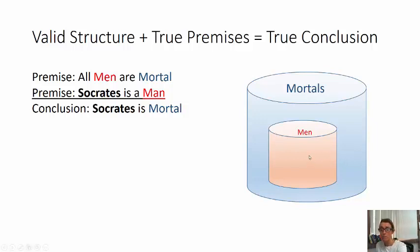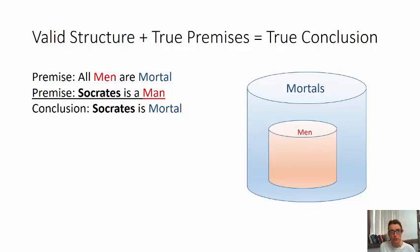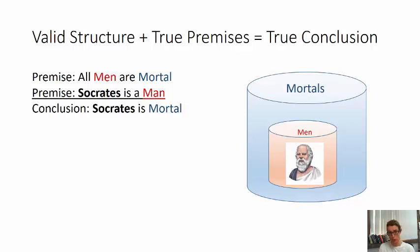So we have a men-bucket inside the mortals-bucket — that illustrates premise one. Now illustrate premise two: Socrates is a man — Socrates goes in the men-bucket. Here's the cool part: if you have a valid argument structure with true premises, by illustrating premise one and drawing premise two, you've already drawn the conclusion.